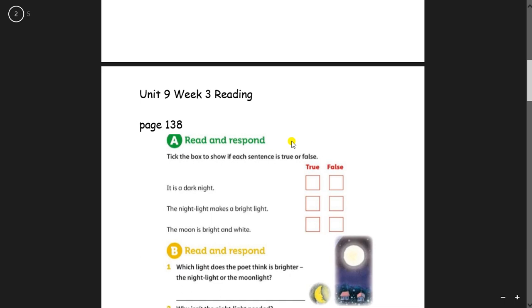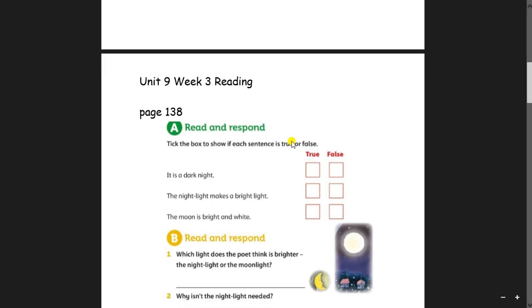Pick the box to show if each sentence is true or false. It is a dark night. It is a dark night. Is it dark? No. False. Tick false.